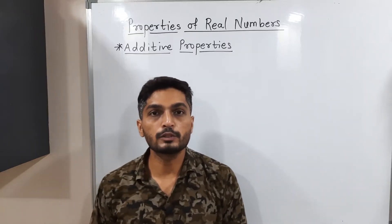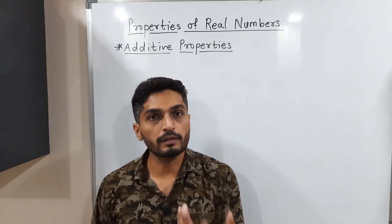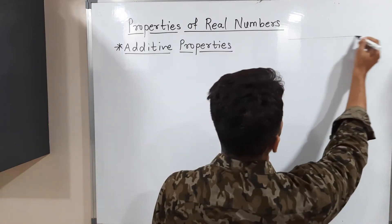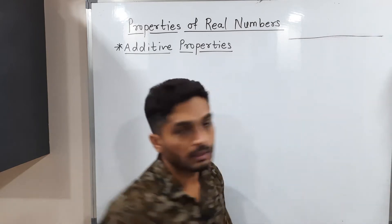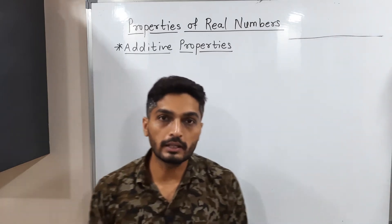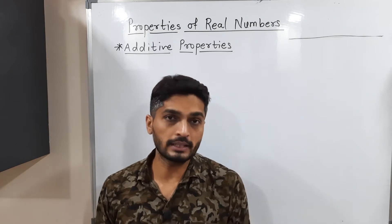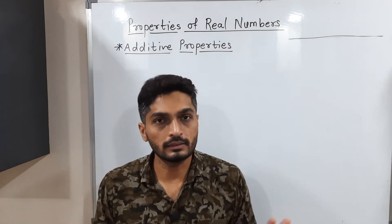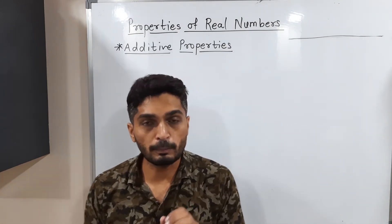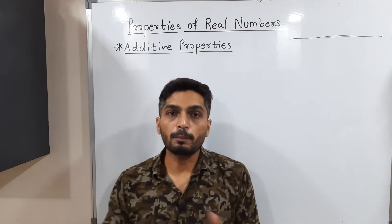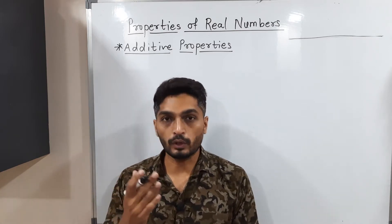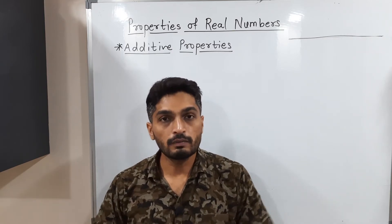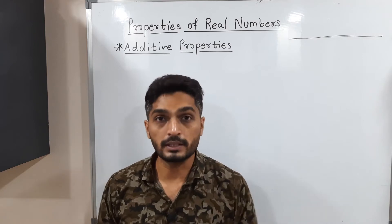Let us discuss properties of real numbers. We have studied real numbers in our previous video. If you have a real line, any number on a real line is called a real number. Those numbers can be rational, irrational, integers — all these are real numbers. These properties are not new for us; we have studied them in school, so here we will recall those properties.